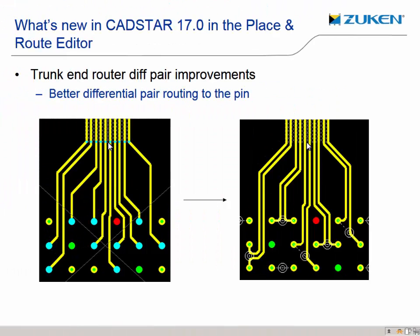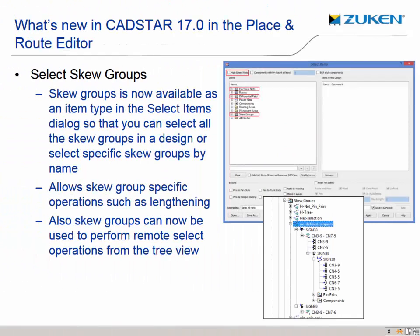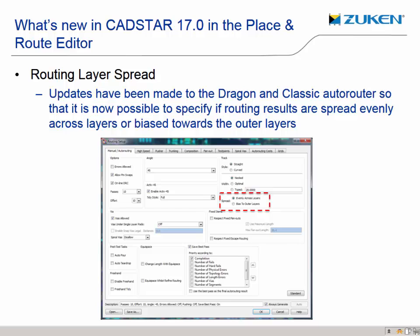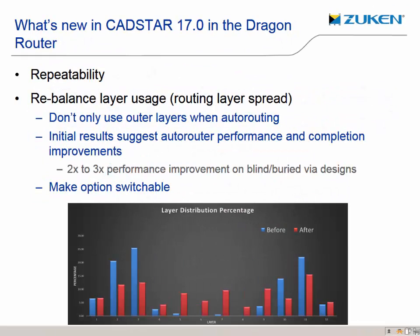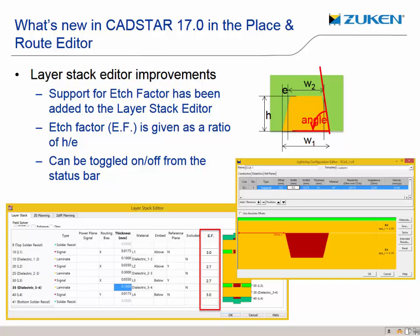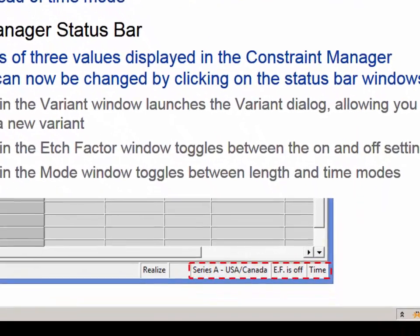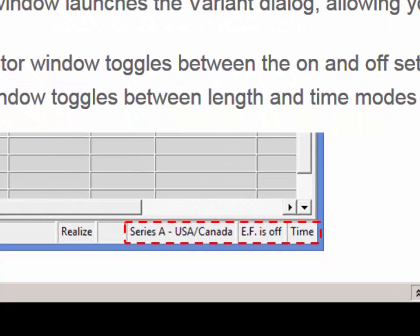The trunk router has been improved so that when routing a differential pair, coupling occurs sooner. Skew groups can now be selected in the PR editor select items dialog and used for remote selection from the tree view. Updates have been made to both the Dragon and Classic auto router so that it is now possible to specify if routing results are spread evenly across all layers or biased towards the outer layers, giving the user greater control over layer balancing. The PR editor layer stack has been improved to include support for the edge factor. The constraint browser and manager now default to length mode when first run. The status bar now includes a quick toggle for variant, edge factor, and length or time mode selection.